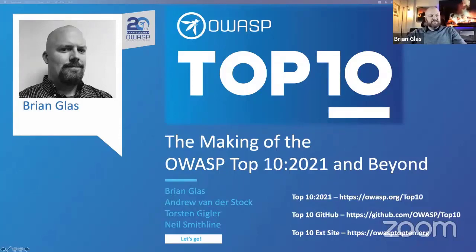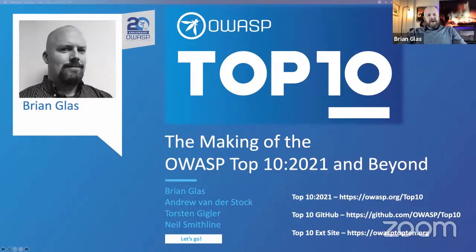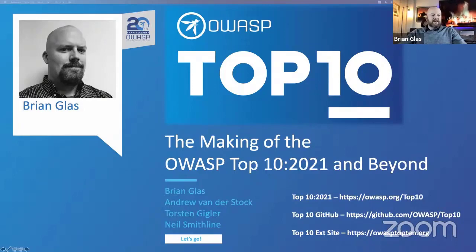We have a pretty diverse set of backgrounds, which leads to lots of good spirited discussions about what we should or should not do. On the title slide you can see three different links: the Top 10 itself at top.owasp.org/top10, our GitHub project where all changes and issues are publicly available, and a separate project site at owasptop10.org with blog entries and periodic updates.